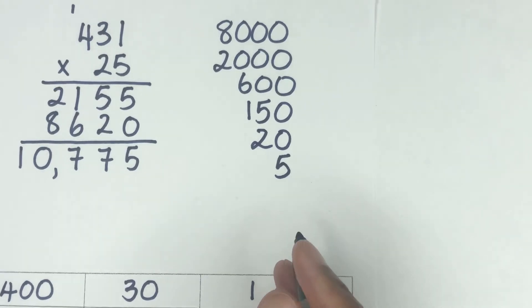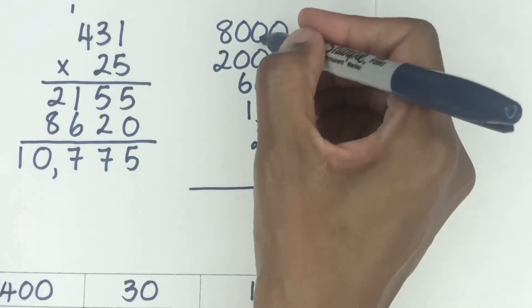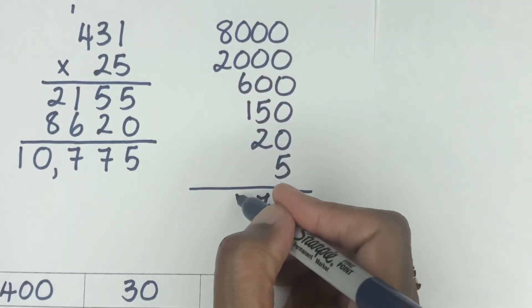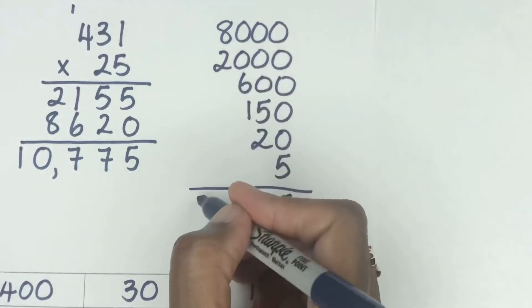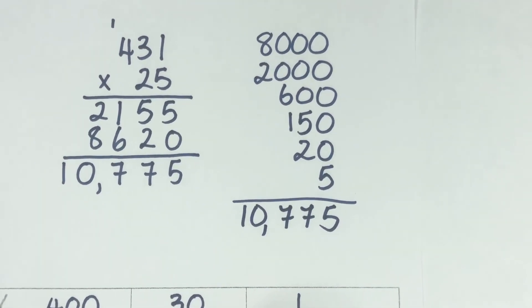All right, so we're going to add everything up now. So we have in the ones place, we just have a five, tens place, we have a seven, hundreds place six plus one is seven, and then eight plus two is 10. See, so you have the same answer, 10,775.